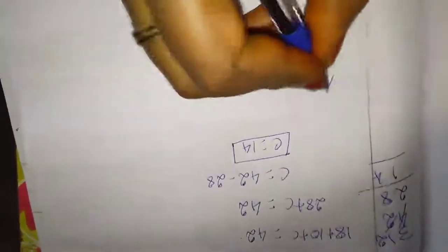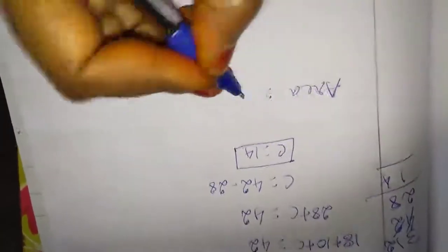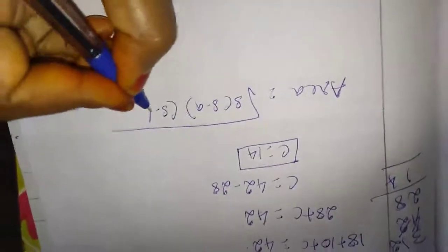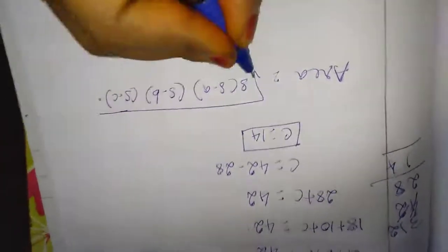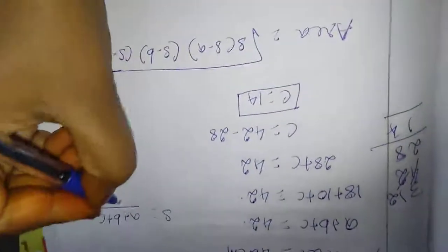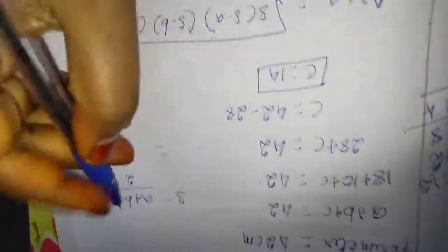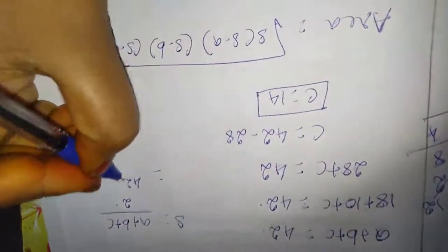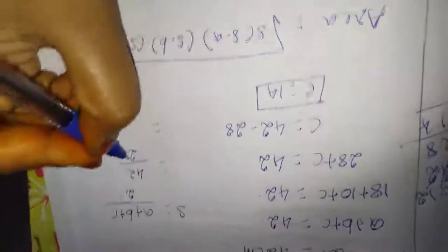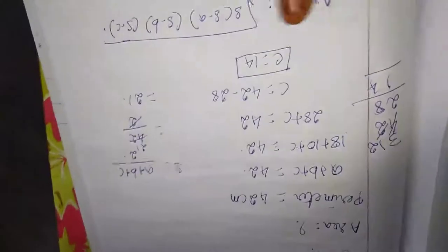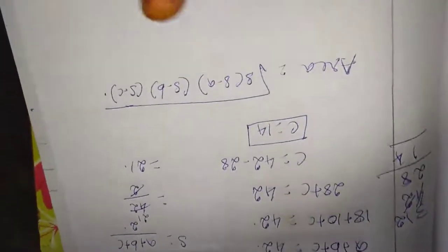Now we are going to find out the area. The area formula is: Area equal to square root of S(S minus A)(S minus B)(S minus C). First we need the S value. S equal to (A plus B plus C) divided by 2, which is perimeter divided by 2 — so 42 divided by 2 equals 21. S equal to 21. Now substitute the A, B, C values in the formula to find the area.